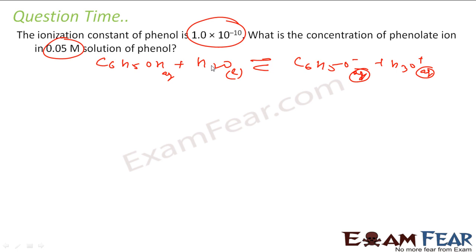So it says that the ionization constant of this is 10 to the power minus 10. What is the concentration of phenolate in 0.05 M solution of phenol? That means at t equals 0 this was 0.05 M and this was 0 and 0. At t equals to some equilibrium, this becomes 0.05 M minus x, this becomes x, this becomes x. So K is nothing but concentration of these squares. This becomes x square by 0.05 M minus x, and this is nothing but 10 to the power minus 10.